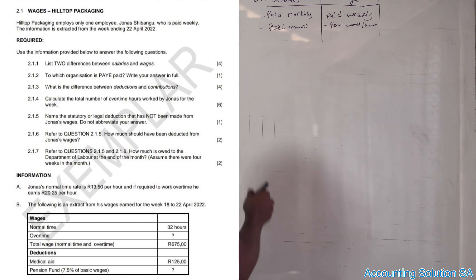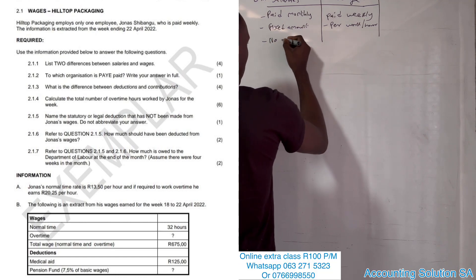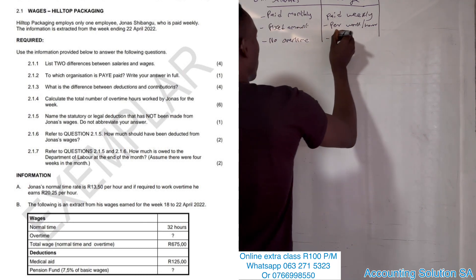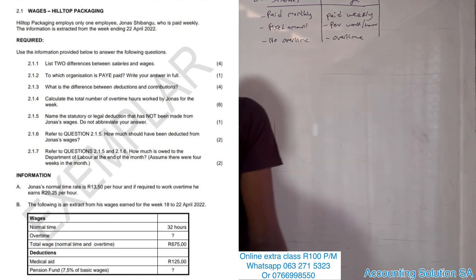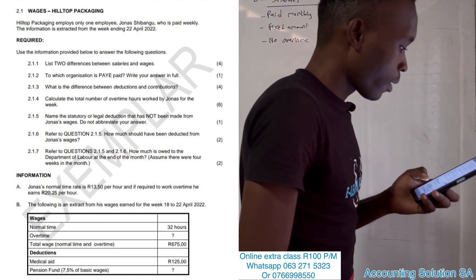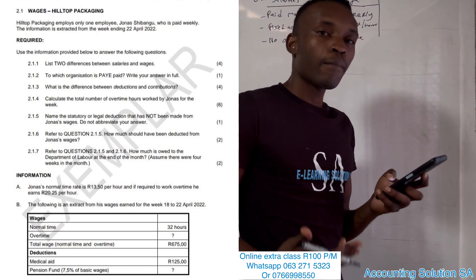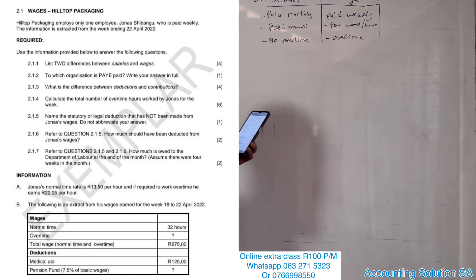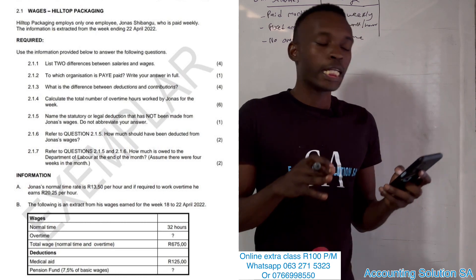A third difference is that under salary there is normally no overtime — it depends on the business — because the amount is always fixed. On the wages side, there is obviously overtime. I've given you three differences but you only need to choose two. Moving on to Question 2.1.2: to which organization is PAYE — Pay As You Earn — paid? Write it in full; don't just say SARS.